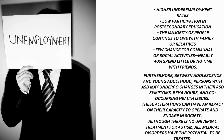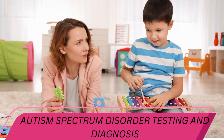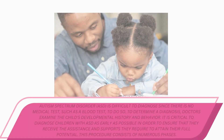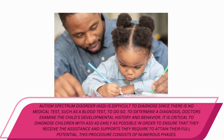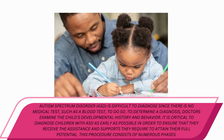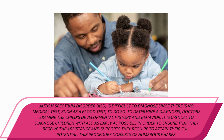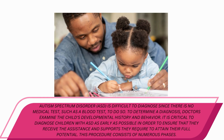Although there is no universal treatment for autism, all medical disorders have the potential to be treated. Autism Spectrum Disorder is difficult to diagnose since there is no medical test, such as a blood test, to do so. To determine a diagnosis, doctors examine the child's developmental history and behavior. It is critical to diagnose children with ASD as early as possible in order to ensure that they receive the assistance and supports they require to attain their full potential.